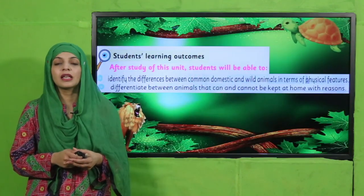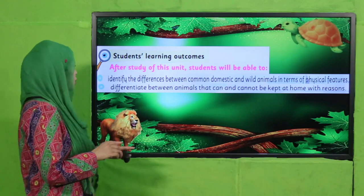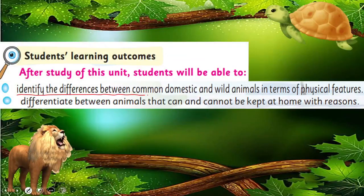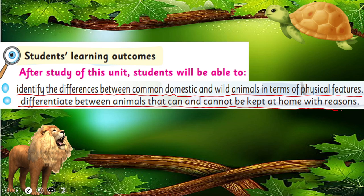Okay my dear students, now is the time to have a look at today's student planning outcome. In today's lecture, students will be able to identify the differences between domestic and wild animals in terms of physical features. They will also be able to differentiate between animals that can and cannot be kept at home with reasons. Today we will study this because we have studied about many animals that we have seen.